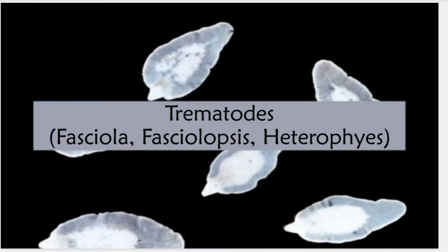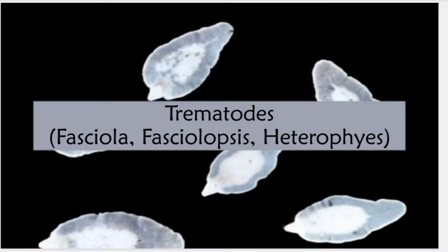Assalamu alaikum friends, welcome back to the channel. Today we are going to talk about trematodes of minor importance, which include Fasciola hepatica, Fasciolopsis buski, and Heterophyes heterophyes. That is a continuation of the parasitology series, especially the trematode series. Before starting, these videos are meant for educational purposes — things and treatments may change with time. If I get anything wrong, your input is always welcomed in the comment section. Have a cup of tea and let's get started.